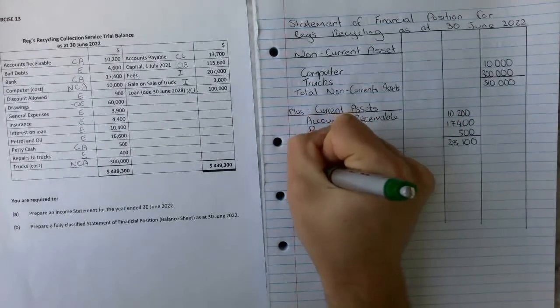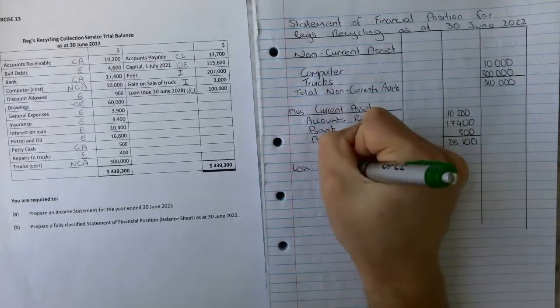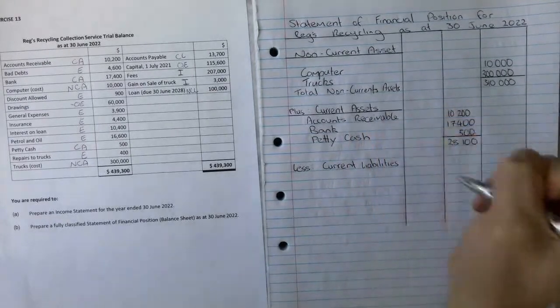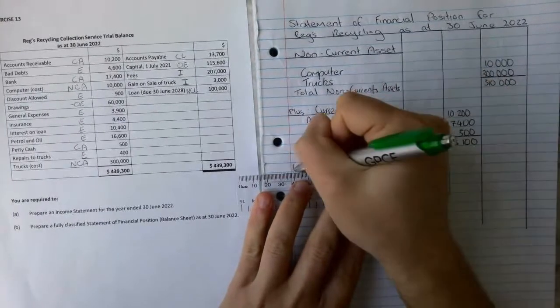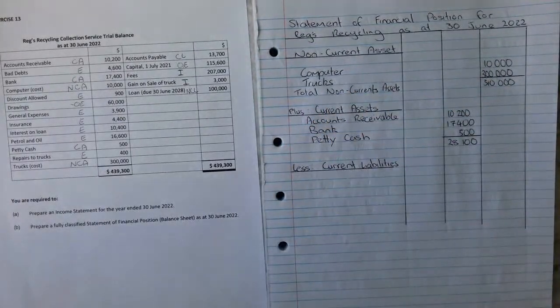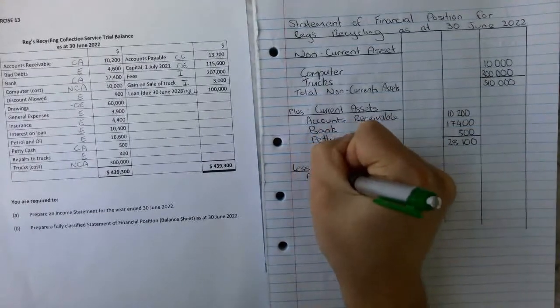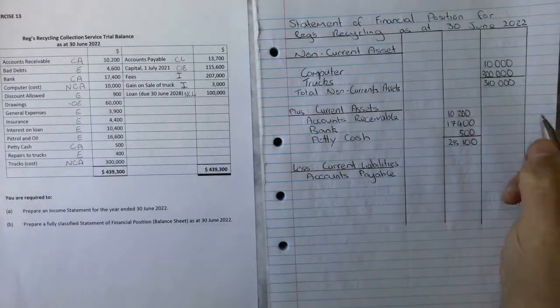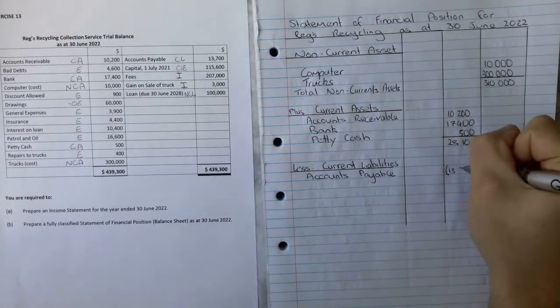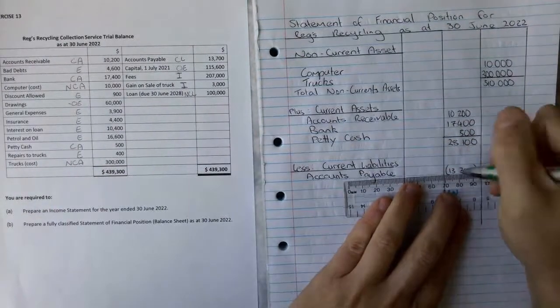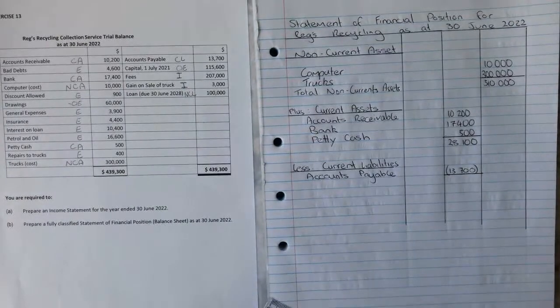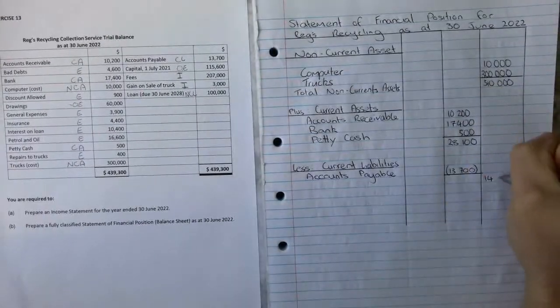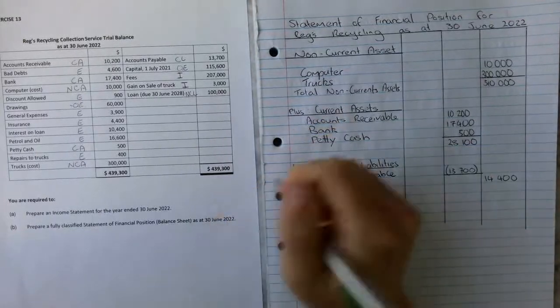It is the $10,200 plus the $17,400 plus the $500 equals $28,100. Then we're going to less our current liabilities. Our current liabilities are going to be accounts payable, there's only one of them. We can put that straight into column two which is $13,700. We're going to underline that and take that away from the $28,100 and that's going to be $14,400.